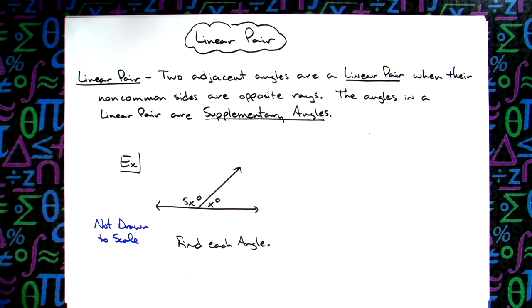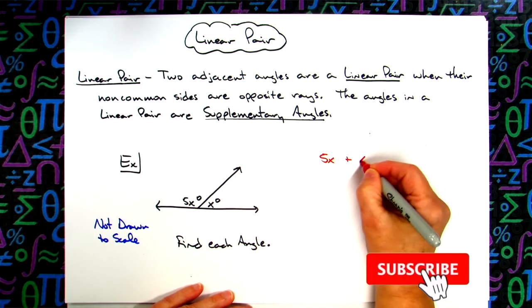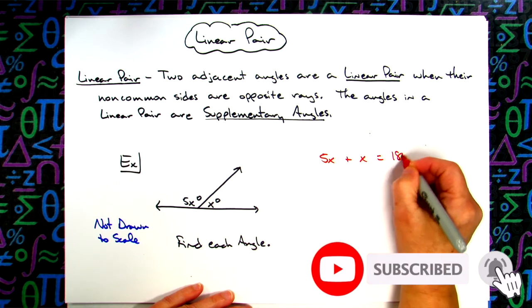We're going to use the fact that we know that these two angles are supplementary, which means they have to add up to 180 degrees. So we're going to take the 5x plus the x and set that equal to 180.